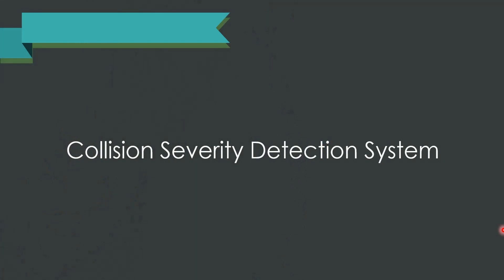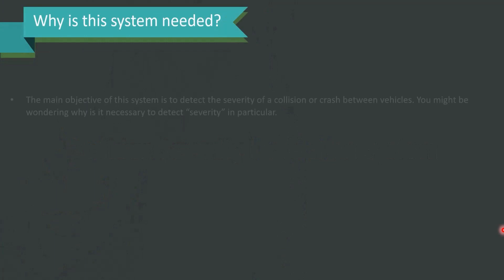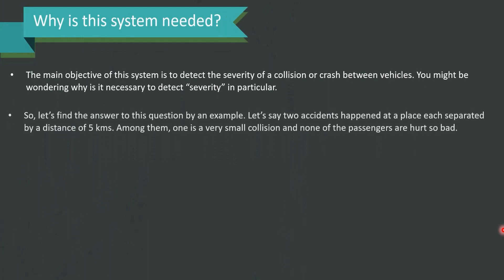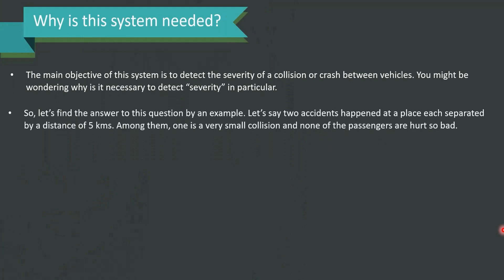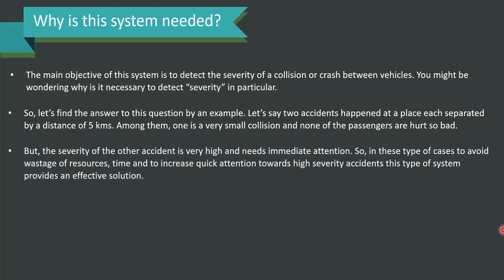The collision severity detection system — why is the system needed? The main objective of the system is to detect the severity of a collision or a crash between vehicles. You might be thinking why it is necessary to detect severity in particular. Let's find the answer with an example: let's say two accidents happened at a place, each separated by a distance of five kilometers.